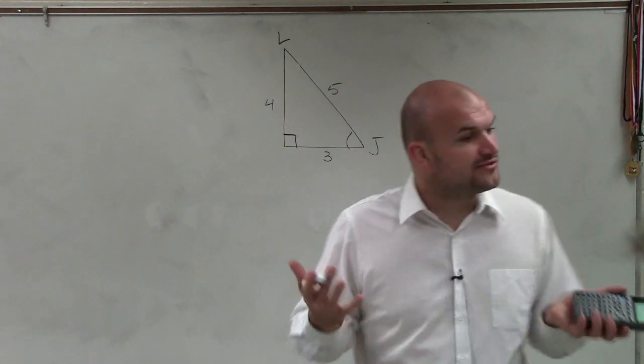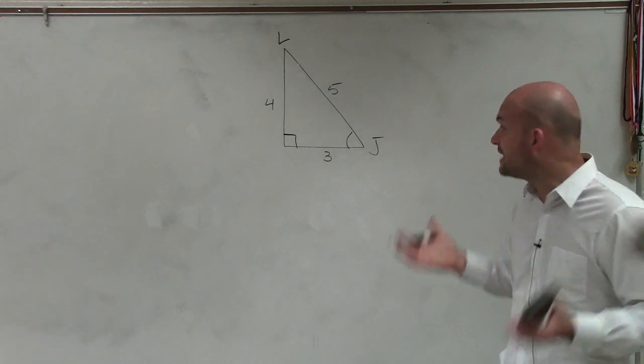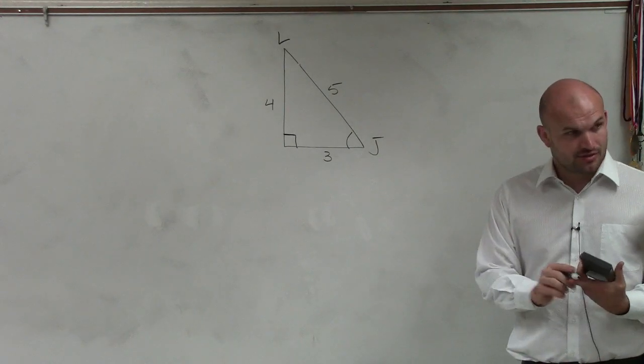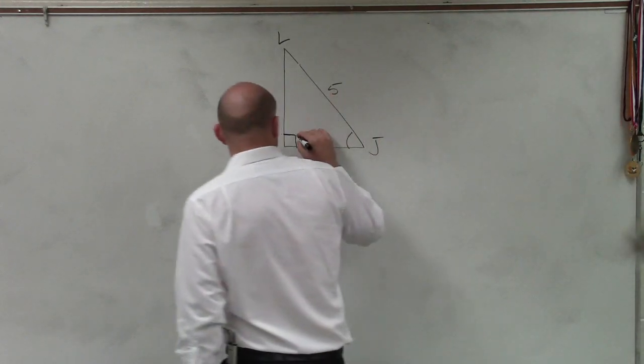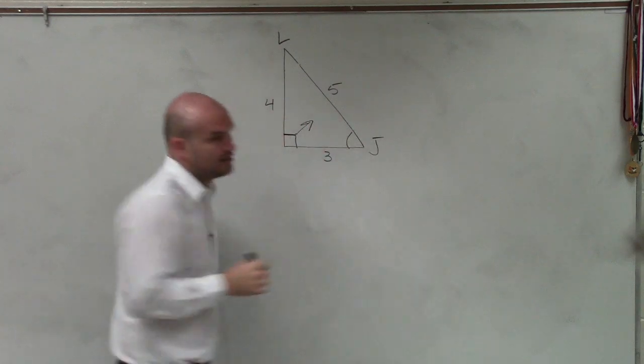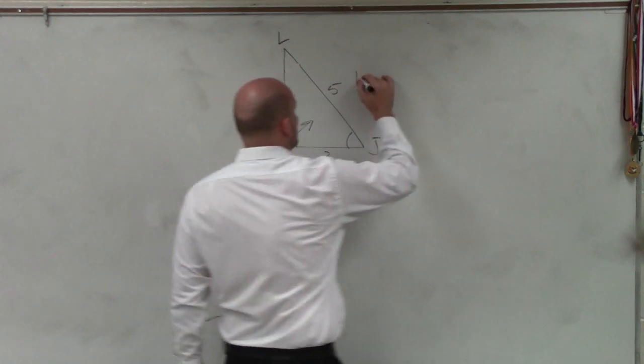So what I told you guys was, first when you see a triangle like this, we have to label our hypotenuse, which you guys should be familiar with. It's always directly across from the right angle. So we'll label that hypotenuse.